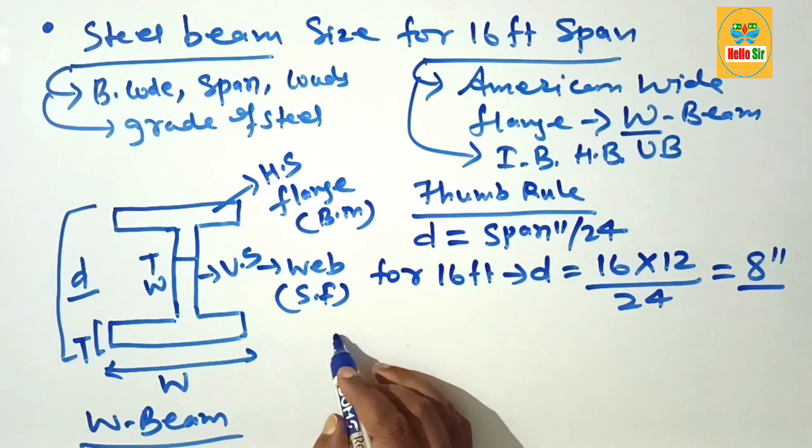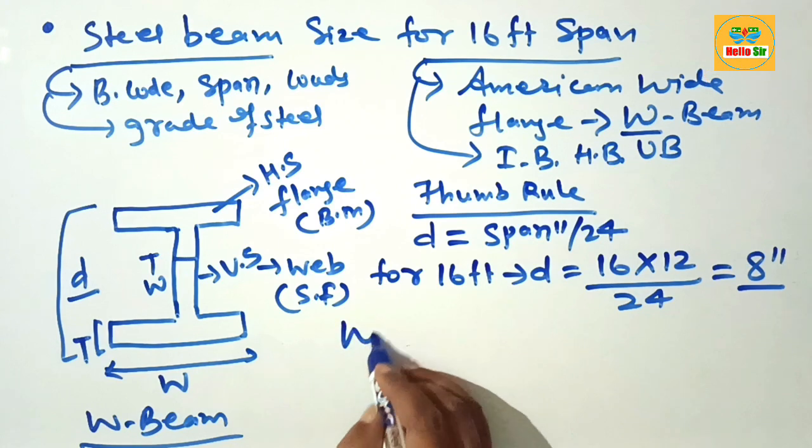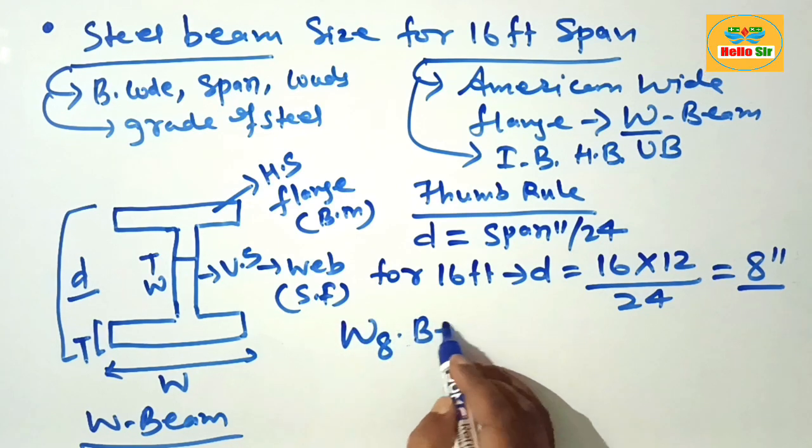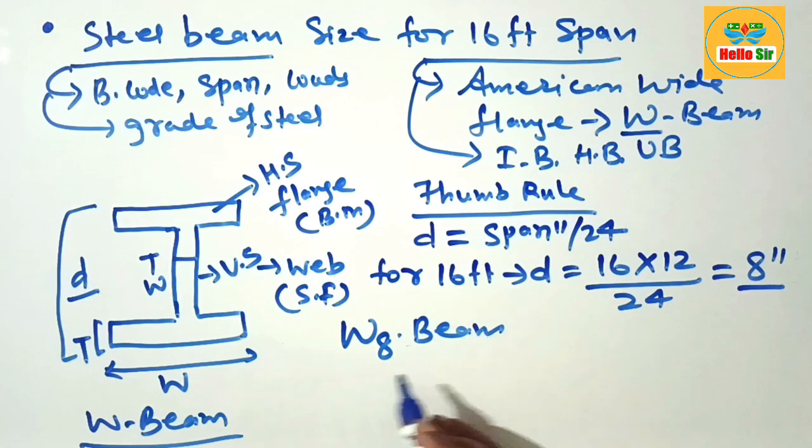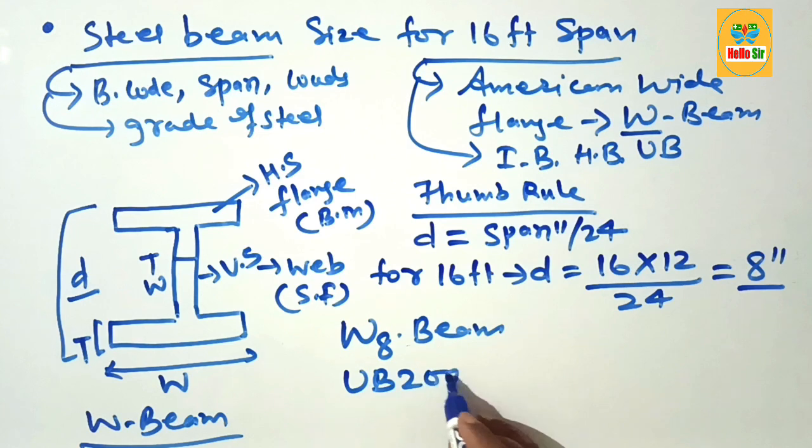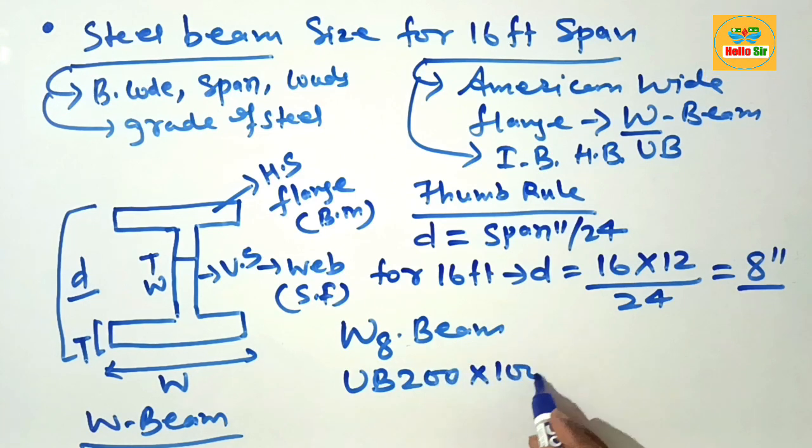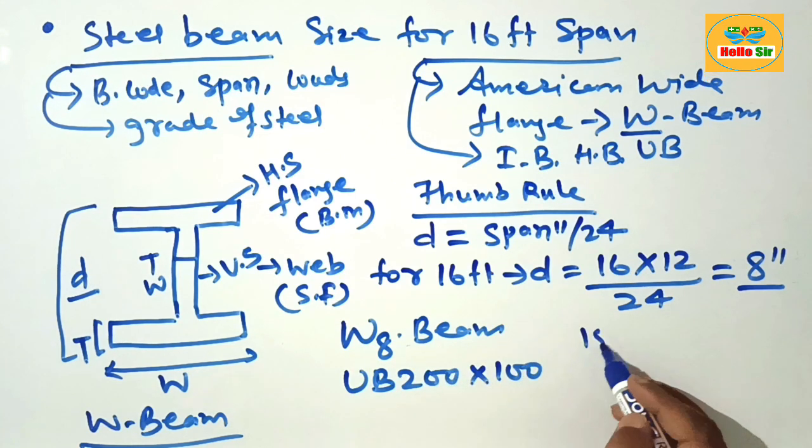It means you need something like American wide flange beam W8 beam for 16-foot span or UB 200 into 100 beam or ISMB 200 beam.